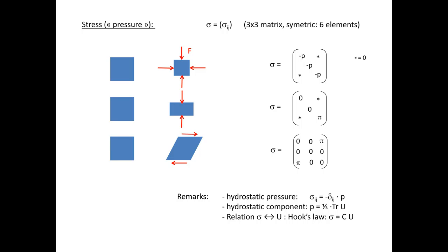You can also apply pressure in just one direction. With forces in one direction you get a matrix where the diagonal is all zero except one element — this is what we call uniaxial pressure. Finally you can apply forces on a surface but not perpendicular to it, giving a stress matrix with non-zero off-diagonal elements — this is shear stress, showing up in the non-diagonal elements.